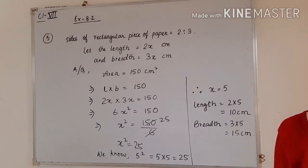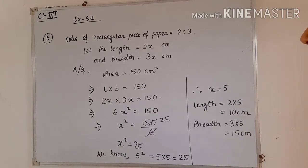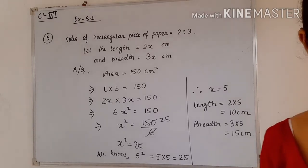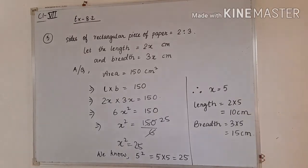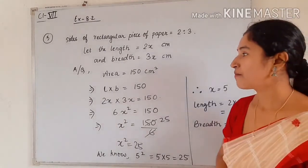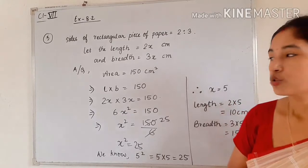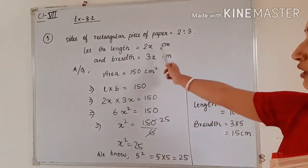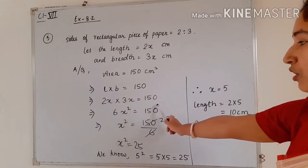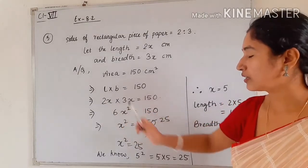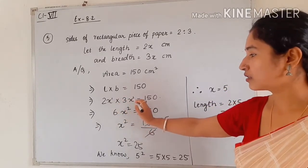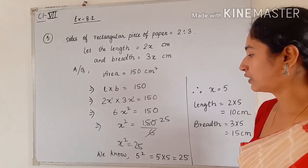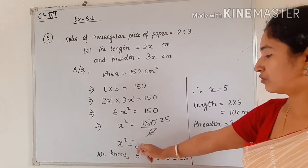In question number 5, the sides of a rectangular piece of paper are given in the ratio 2 is to 3. Since it is not specified which is length and which is breadth, we take length as 2x and breadth as 3x. According to the question, the area is 150 square centimeters. Area of a rectangle is length into breadth, so 2x into 3x equals 150, which gives 6x squared equals 150.